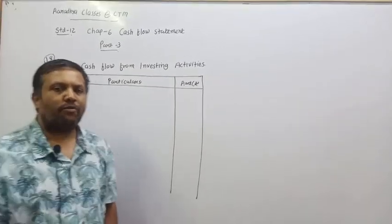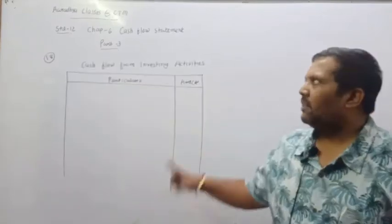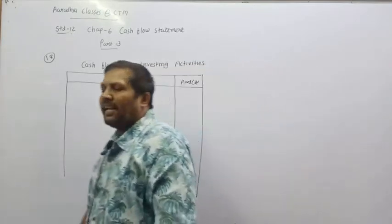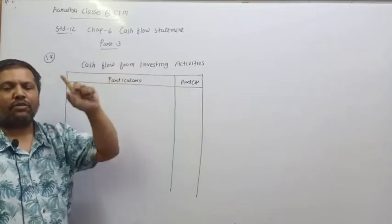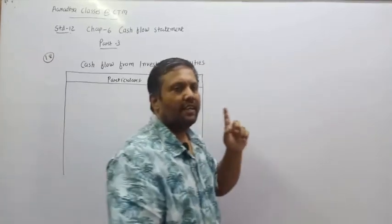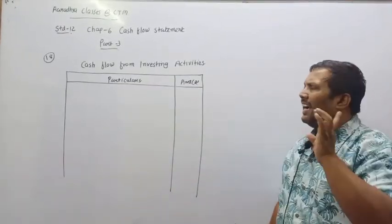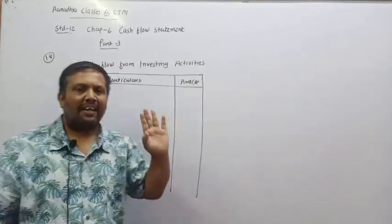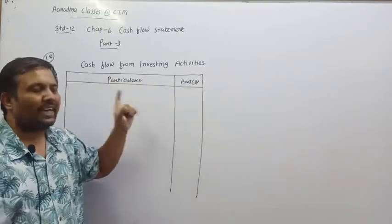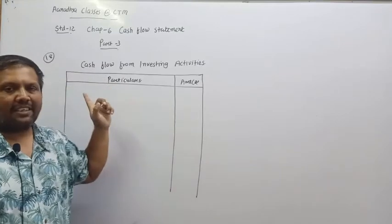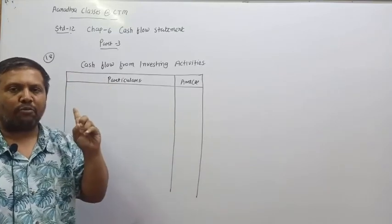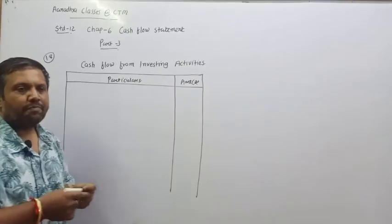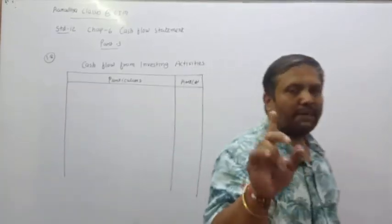Hello friends, good afternoon. Welcome to Aradya Classes. Standard 12, subject Accountancy, Chapter 6: Cash Flow Statement. Last time we covered the format inside the cash flow statement. In this chapter there are three types of activities: number one operating activity, second investing activity, and third financing activity. Today we start from page number 286, sum number 18.